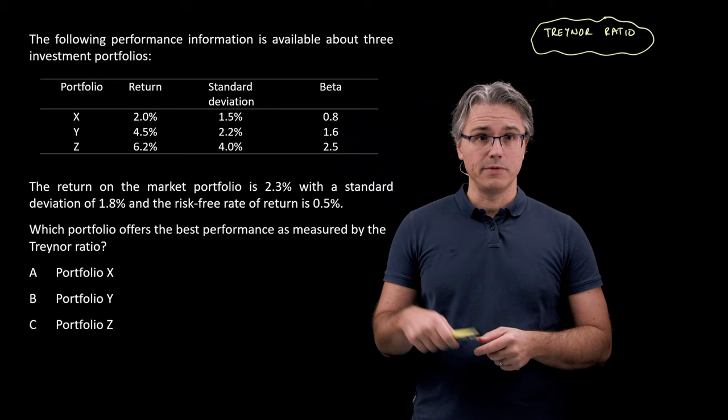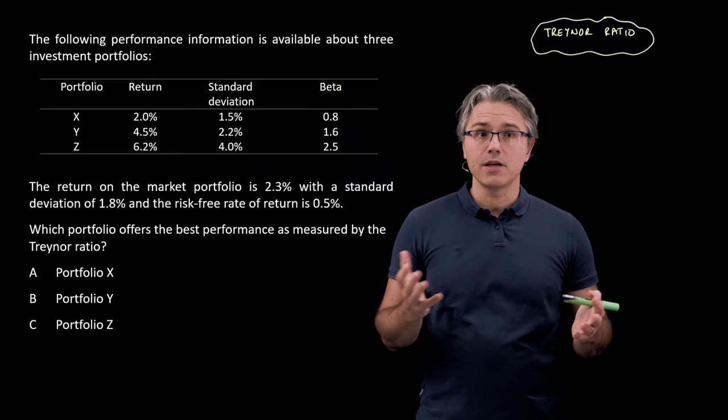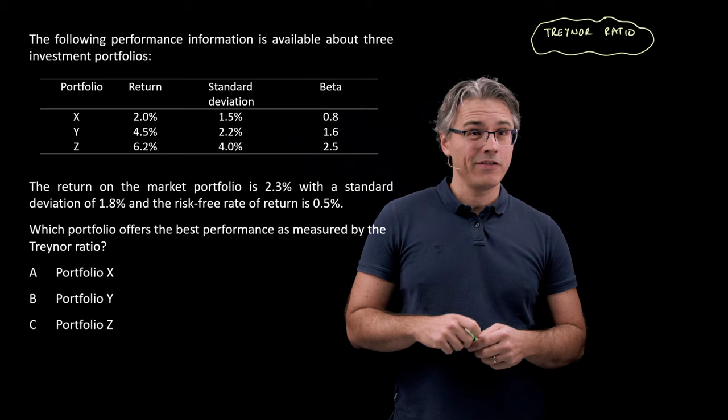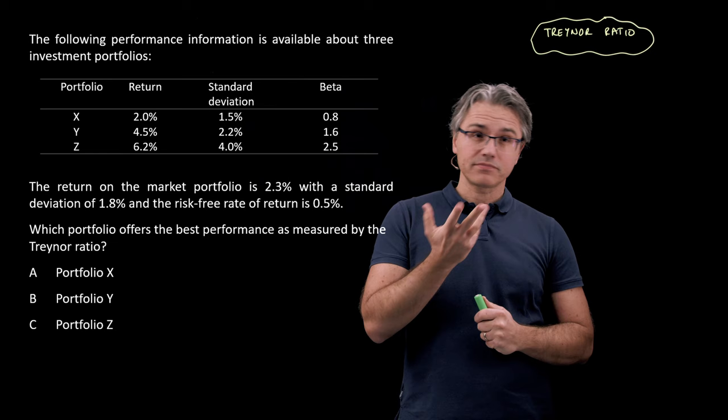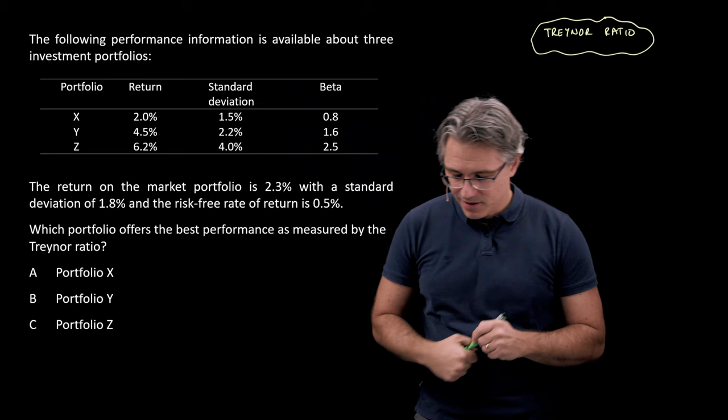Now this concept of the Treynor ratio is placed at the very end of the relevant chapter where the CAPM model is introduced, and I fear there is a risk you'll never get to it—you may run out of time. So I decided to create a question on it.